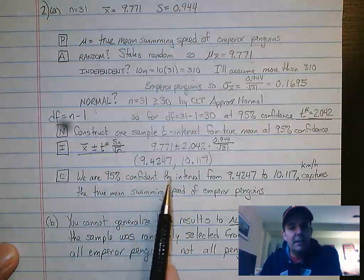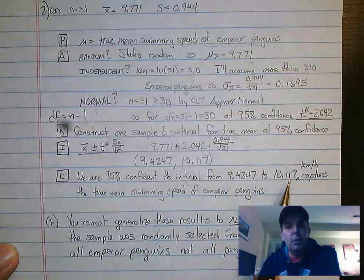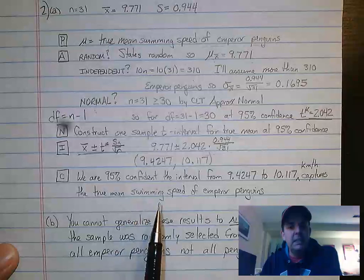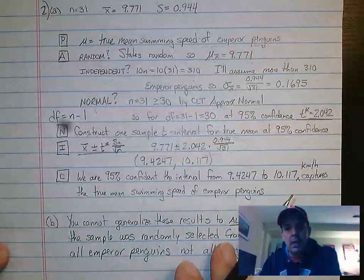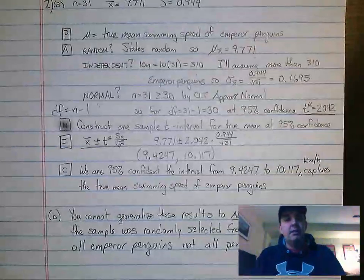Final statement: we are 95% confident that the interval from 9.4247 to 10.117 kilometers an hour captures the true mean swimming speed of emperor penguins. That would be your full PANIC, your full confidence interval for means.